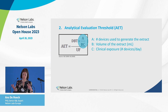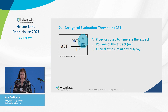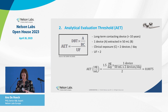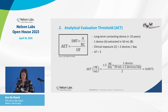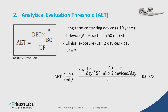The formula also includes factors A, B, and C to convert the dose-based threshold to a concentration-based threshold. A is the number of devices used to generate the extracts, B is the volume of the extracts, and C is the clinical exposure. For example: an implant in place for more than 10 years uses a DBT of 1.5 µg/day; if one device was extracted in 50 mL with a clinical exposure of 2 devices per day and an uncertainty factor of 2, you put those values into the formula to obtain a specific AET.